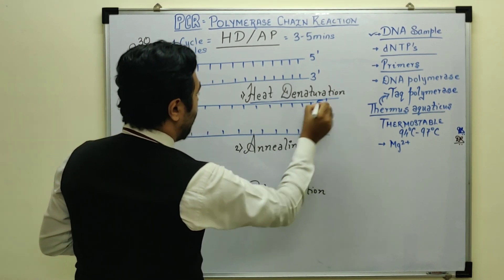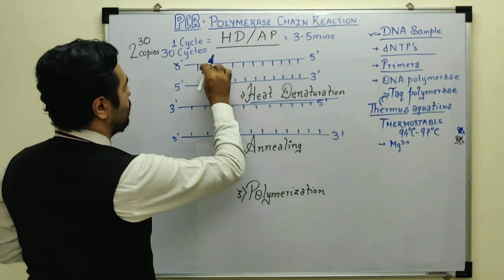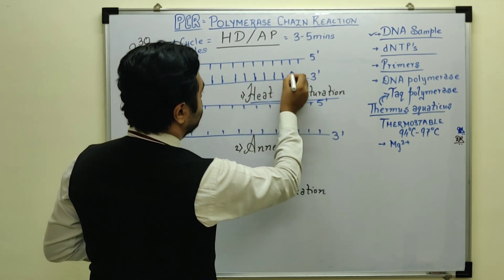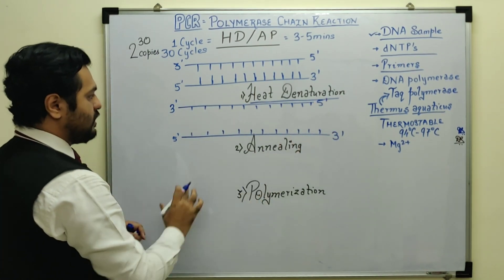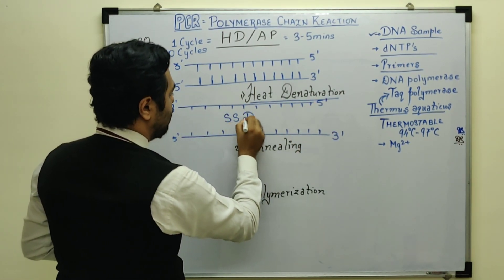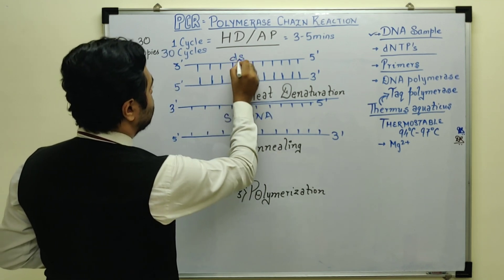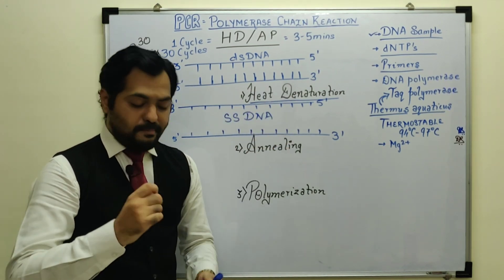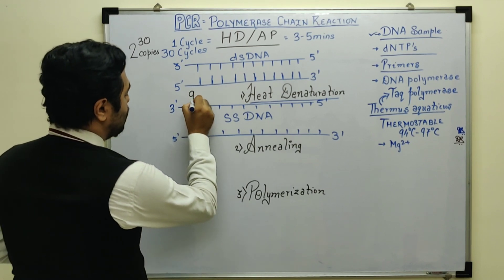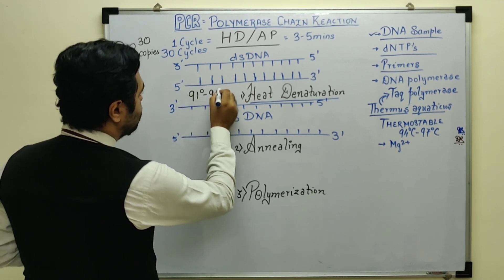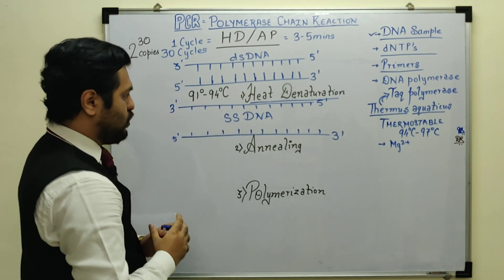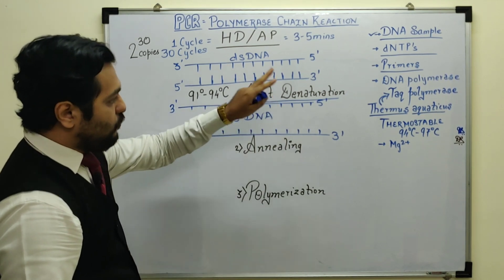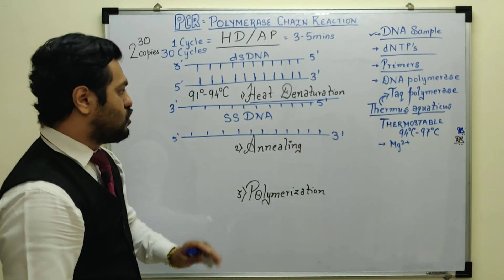After denaturation, one strand runs 3' to 5' and the other runs 5' to 3', and the hydrogen bonds between the nitrogen bases have been broken, giving us two single-stranded DNAs. The temperature used for heat denaturation is around 91 to 94 degrees Celsius — maximum up to 96 — but 91 to 94 degrees Celsius is standard. The enzyme used is thermostable, so there are no issues at this high temperature.